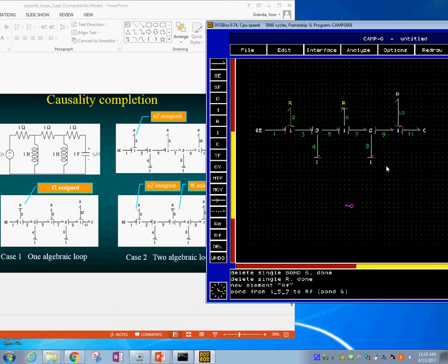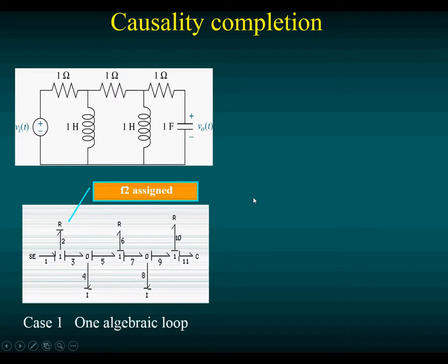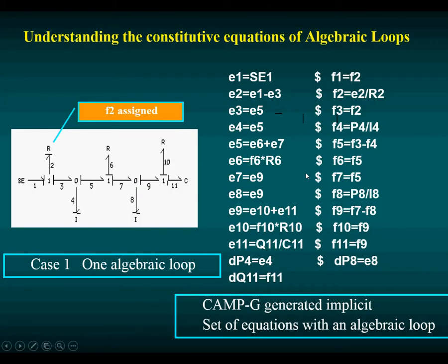CAMPG uses the yellow color for this type of R element so you can see they are not the regular elements. We assign f sub 6 here, and then you fix it with one more algebraic loop. So the logical thing is that the R element determines where the flow is on that one junction. If we put another RF element to determine the remaining one, then we fix it — no red anymore. Now CAMPG will produce the implicit set of equations generated with this.